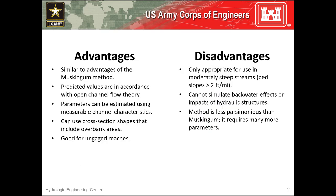A major advantage of this method is that the predicted values are in accordance with open channel flow theory. Also, you can simulate variable translation and attenuation effects, and the required parameters can be estimated using physically measurable characteristics of the region in question. However, this method is less parsimonious than simpler methods in that more parameters are required. It also cannot simulate backwater effects and is only appropriate for use in streams with slopes greater than two feet per mile in situations with slowly rising hydrographs.